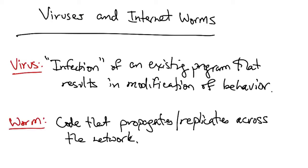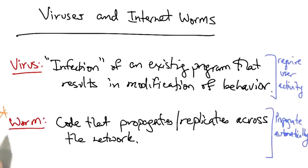Whereas viruses typically require user action to spread — for example, opening an attachment on an email or running an executable file that a friend gave you on a USB key — worms propagate automatically.